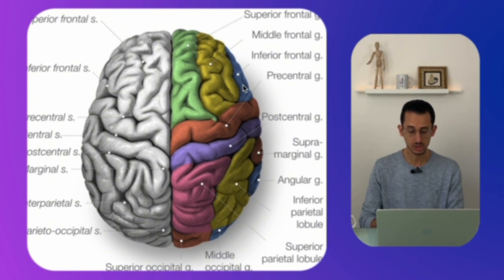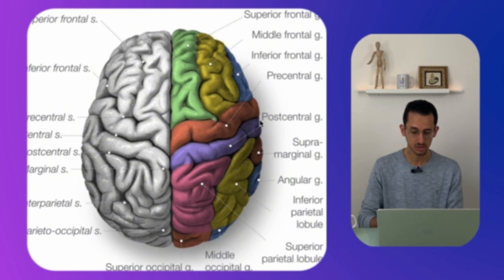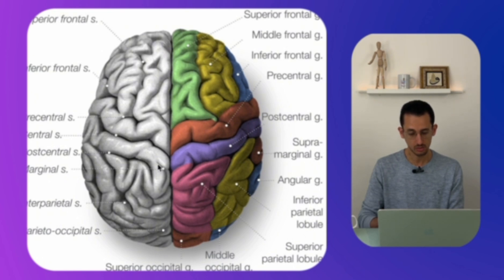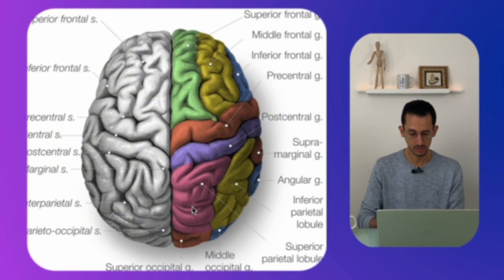We have the pre-central sulcus that separates all three frontal gyri from the pre-central gyrus. After the pre-central gyrus, you have the central sulcus, and after that comes the post-central gyrus, which is part of the parietal lobe. You can also see the marginal sulcus — we'll talk about this later as one of the ways to identify the motor cortex — as well as the superior and inferior parietal lobules.